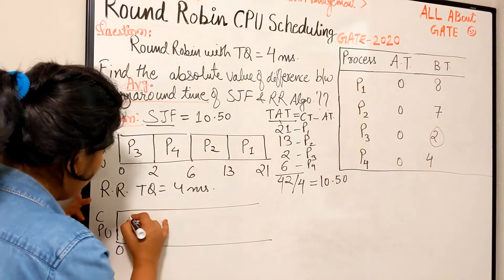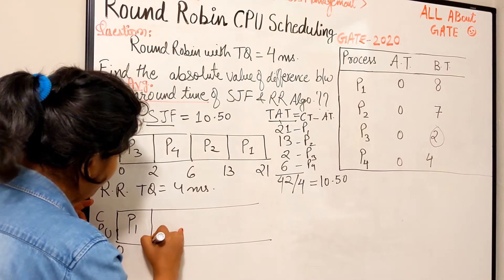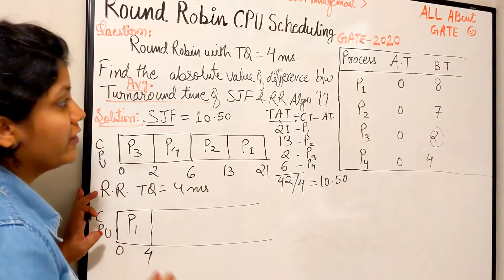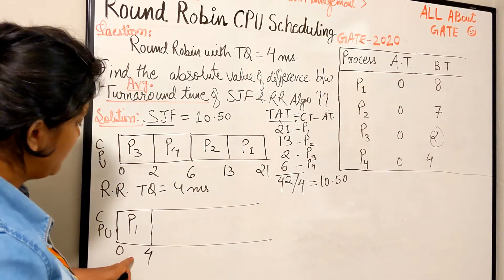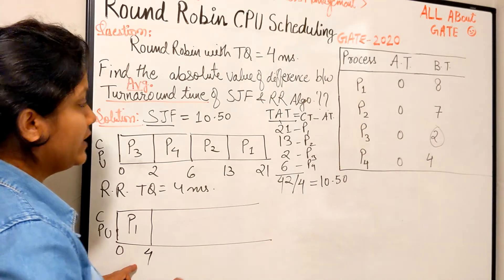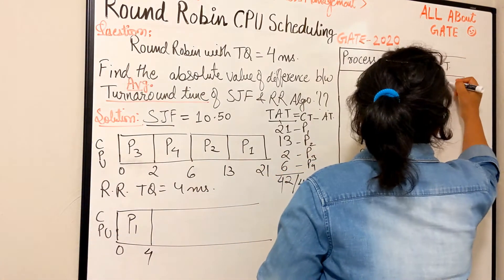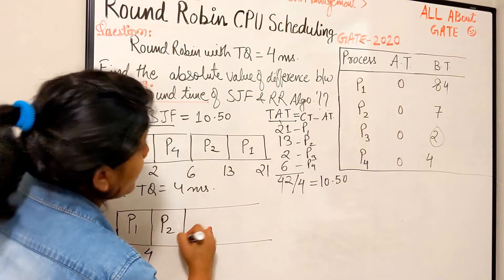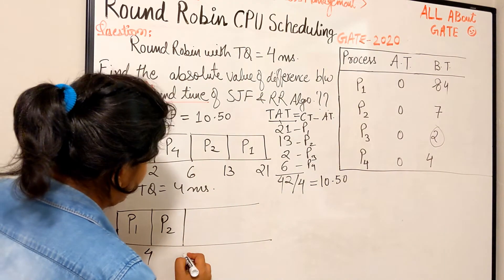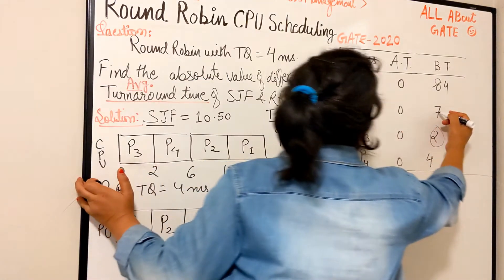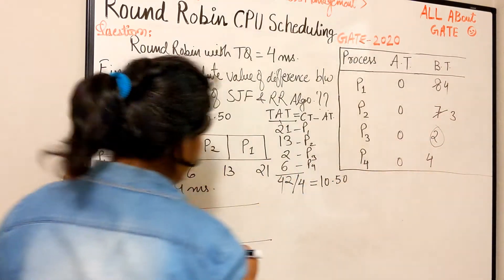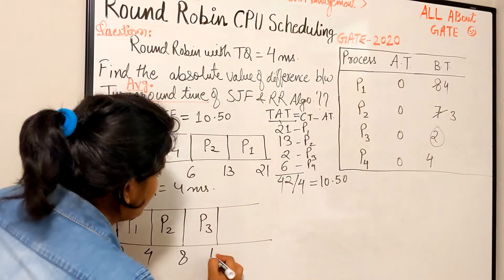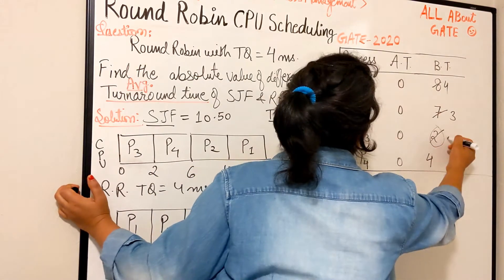P1 goes first, given quantum 4, so it becomes 4 here and 4 remaining. Next comes P2, given 4, so 4 plus 4 equals 8, and it has 3 remaining. Now comes P3, given 2 because it only needs 2, so it's 10 and becomes 0.